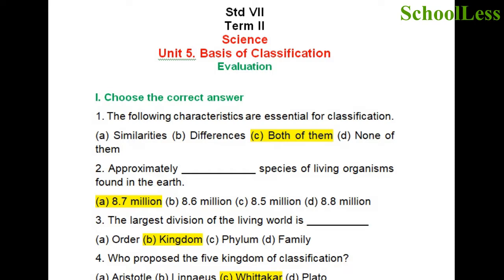Question 1: Choose the correct answer. The following characteristics are essential for classification. A. Similarities. B. Differences. C. Both of them. D. None of them. The right answer is both of them, because both the similarities and differences between two different organisms are useful for classifying them into a particular group.